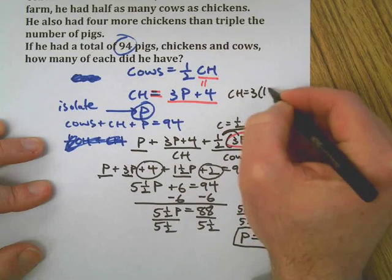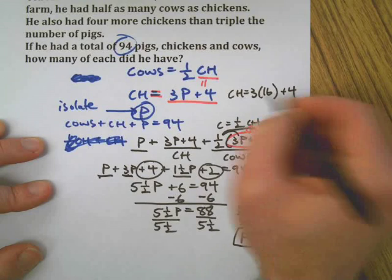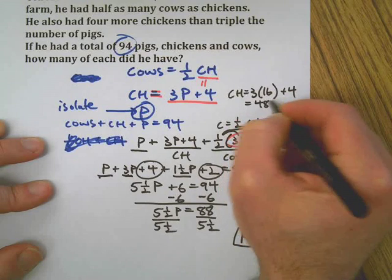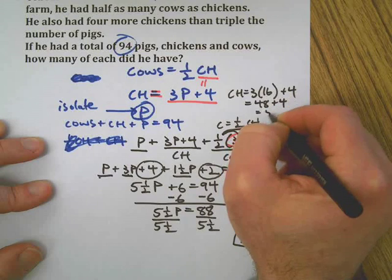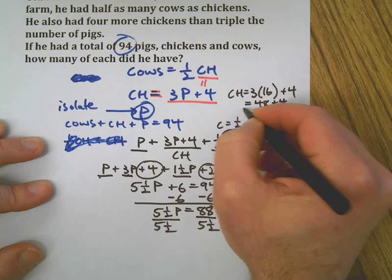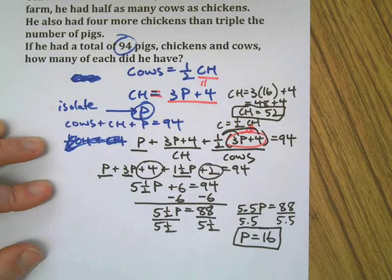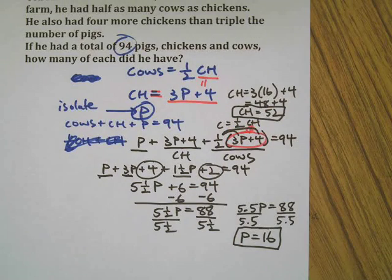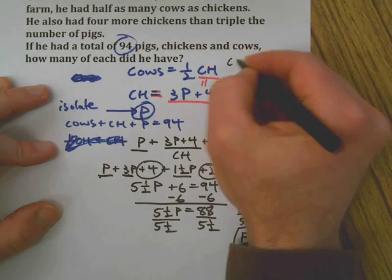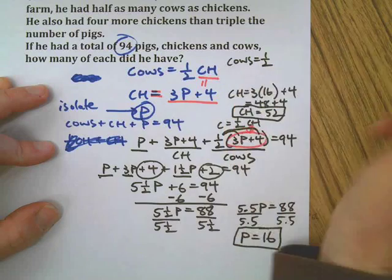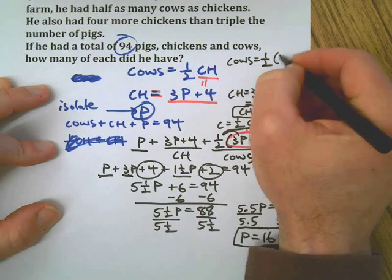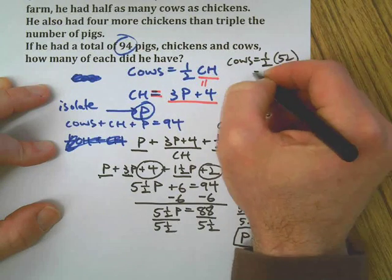3 times 16 plus 4—52 chickens, 16 pigs. And cows are one-half the number of chickens—makes 26.